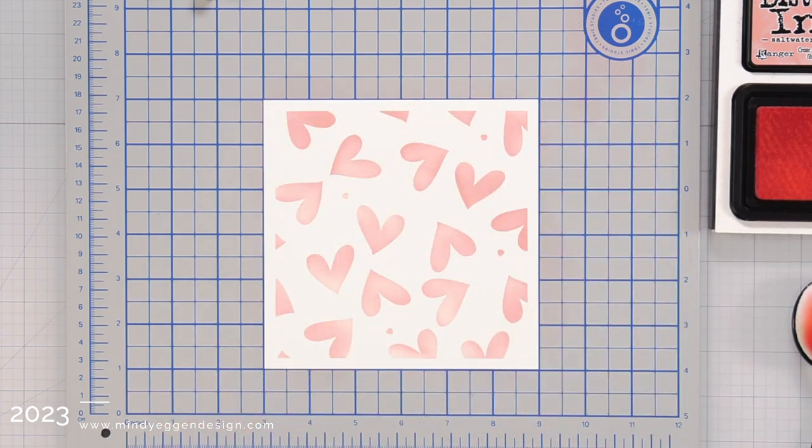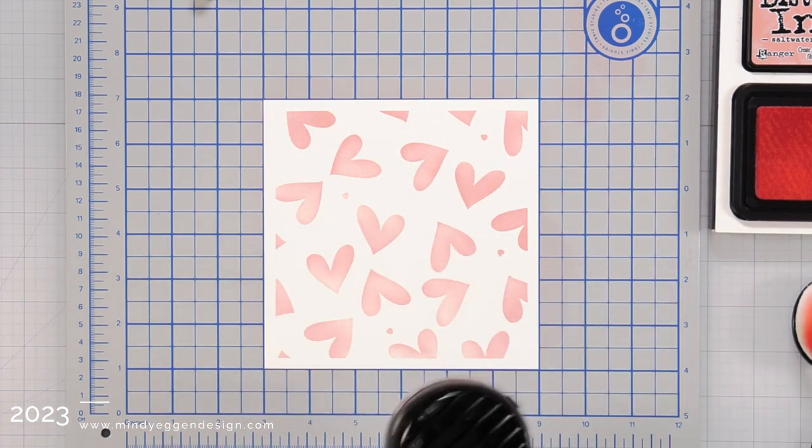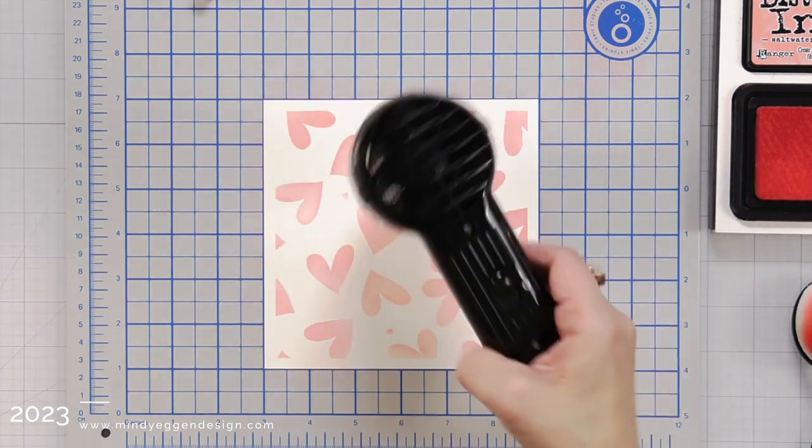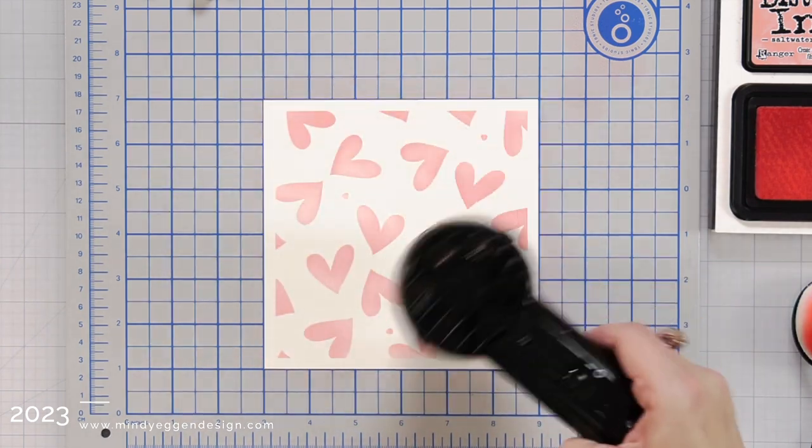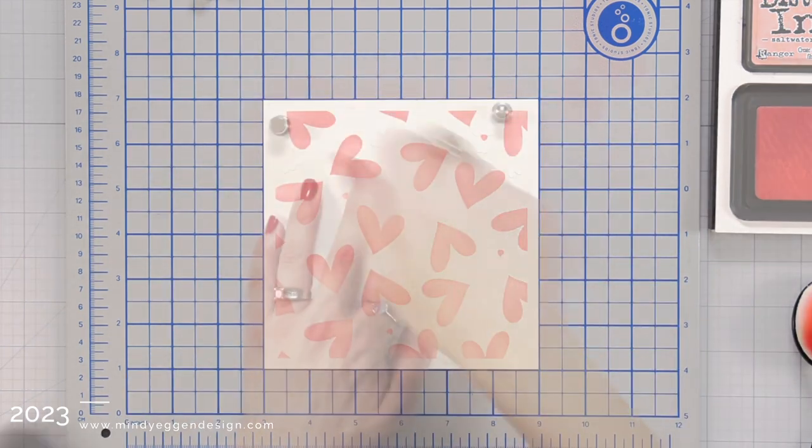The cardstock I'm actually using today is Concord & 9th white cardstock which is super smooth and great for ink blending, but the ink does sit on it for just a little while longer than it would Neenah cardstock.